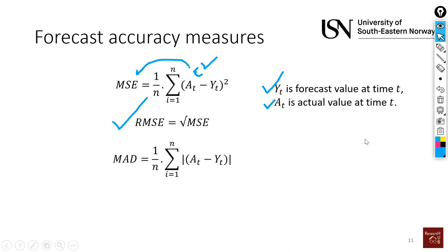The next one is MAD, Mean Absolute Deviation. What we are doing here is we are just taking the difference between the two, actual and forecasted value, and then taking the absolute of that with this symbol here. We are taking the absolute, we are just cancelling out the plus minuses.